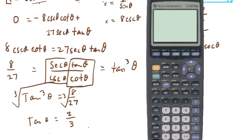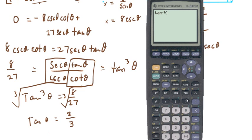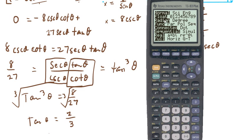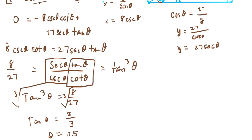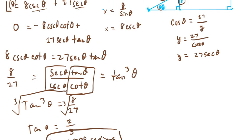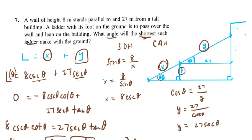Using a calculator — this angle isn't on the unit circle — we apply the inverse tangent function: arctan of 2 divided by 3 gives us 0.588 radians. So theta equals 0.588 radians, and that is the angle that will give the shortest length for this ladder.